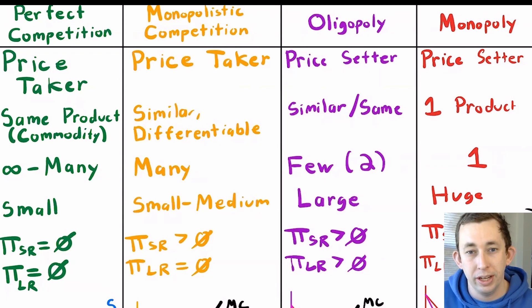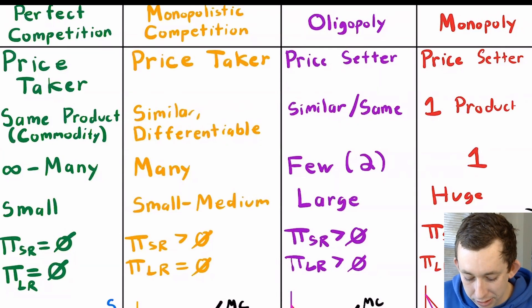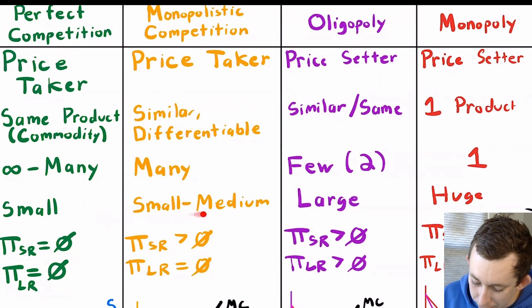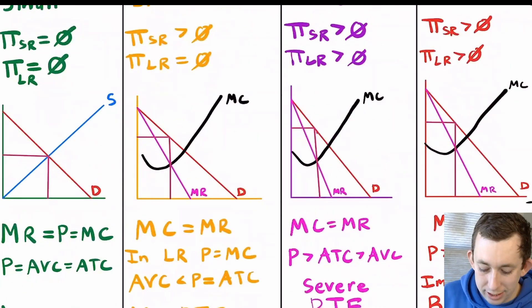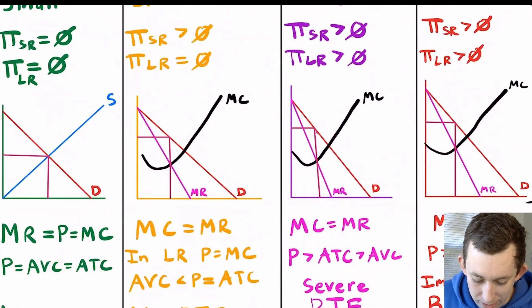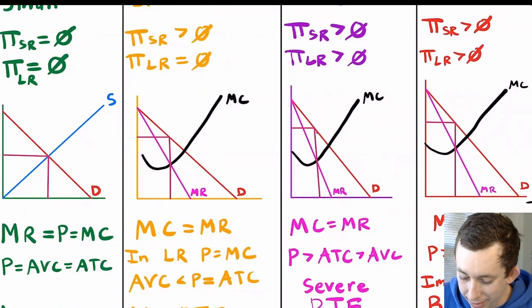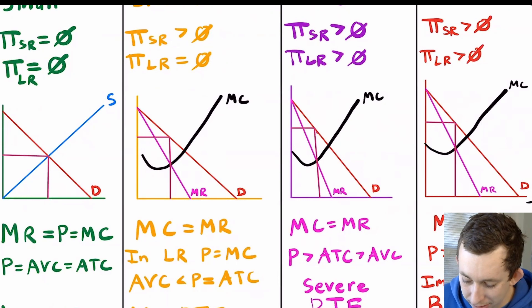In monopoly there's only one product in the market. The number of firms: perfect competition has infinitely many, monopolistic competition fewer but still many, oligopoly few or two firms if it's a duopoly, and monopoly just one firm. The size of each firm is also increasing as we go from perfect competition to monopoly — starting very small and ending with a huge firm in the monopoly setting.